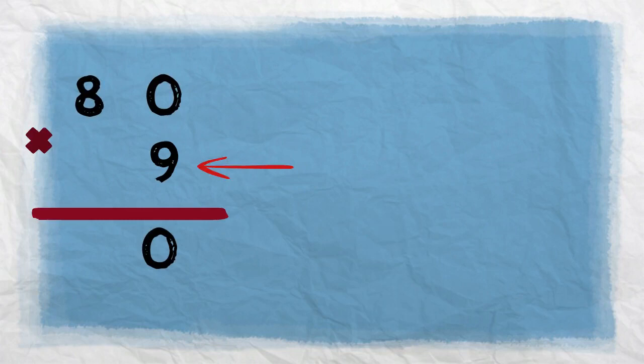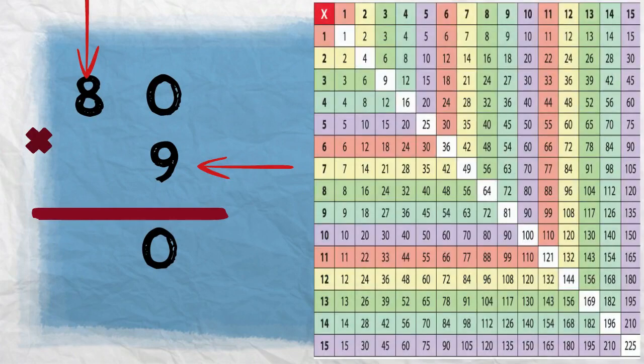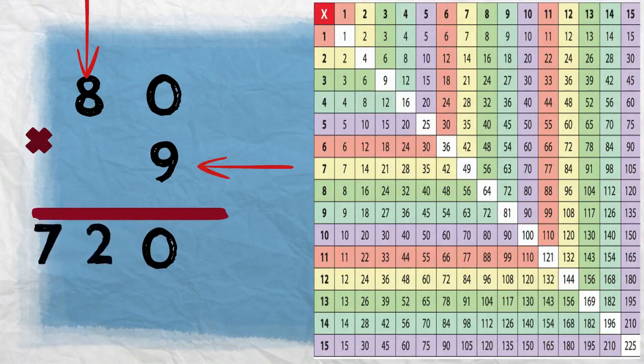For the second step, we multiply the bottom number by the tens digit of the top number, which is 8. 9 times 8 — and if I don't remember off the top of my head, I can always look at my multiplication table. So 9 times 8 is 72. The final answer is 720.